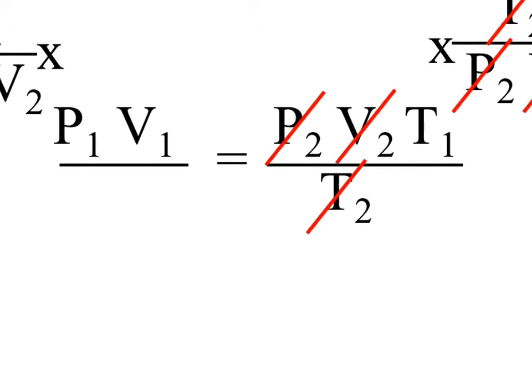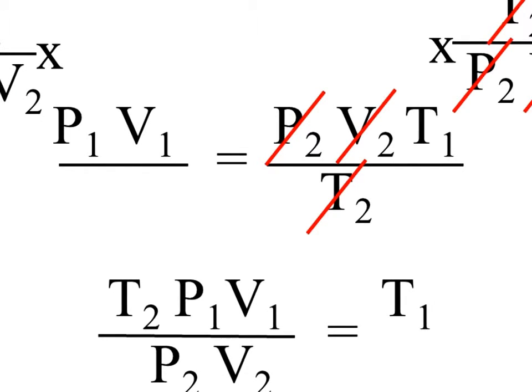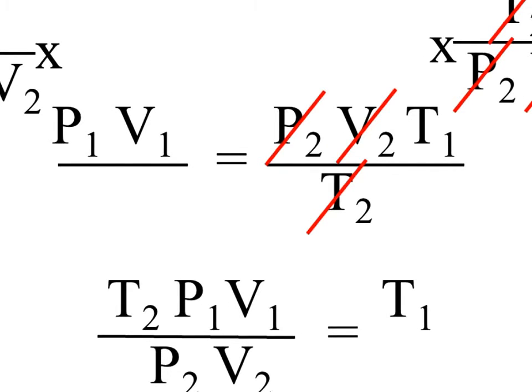All of those guys cancel. Notice, they don't cancel over here because these guys are different from those. T2 times P1 V1 over P2 V2 equals T1. I have the five that I know on one side and the one that presumably I didn't know on the other.